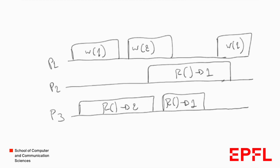But could this execution be generated by a regular register? The read returning 1 is concurrent with the write of 1, so that's fine. The second read returning 1 is concurrent with the write of 2, so it could return the previously written value of 1 — also fine. And the read returning 2 is concurrent with the write of 2 — also fine. So yes, this could be an execution of a regular register.